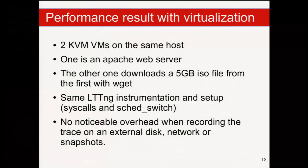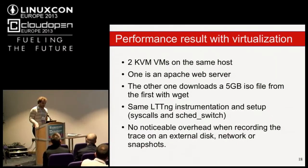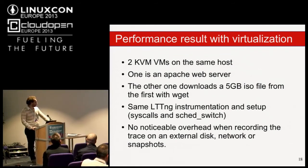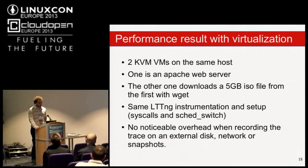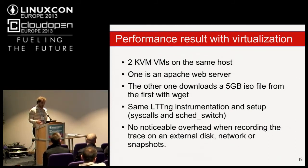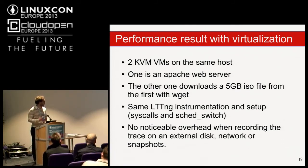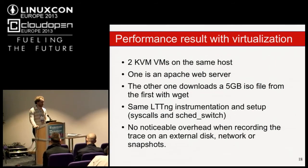Another performance example for virtualization: two KVM virtual machines on the same physical host — one an Apache web server, the other downloading a 5 GB file with wget. Using the same instrumentation (sched_switch and system calls), we see absolutely no overhead compared to no tracing. Once again it's I/O intensive, but there's also significant CPU usage due to virtualization and context switching between the two VMs.